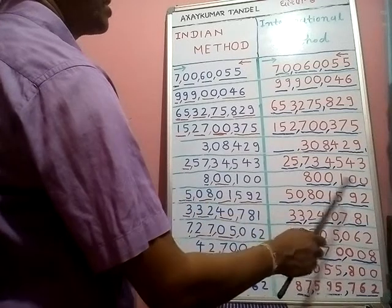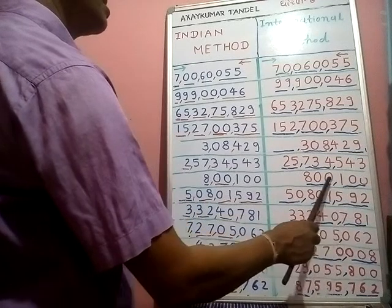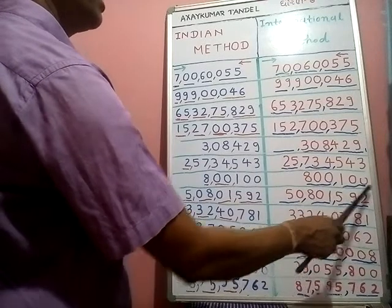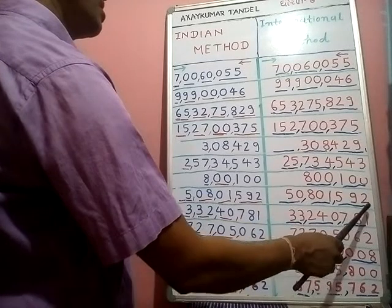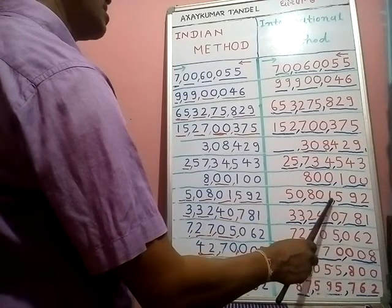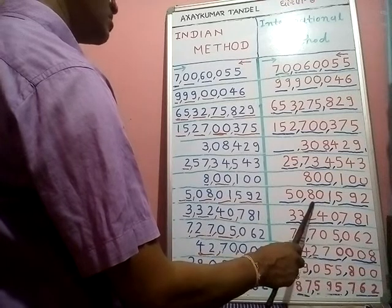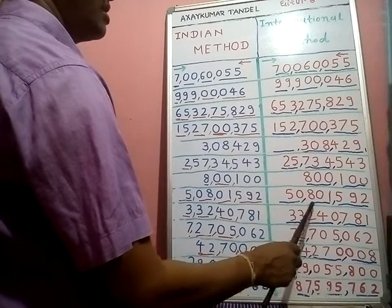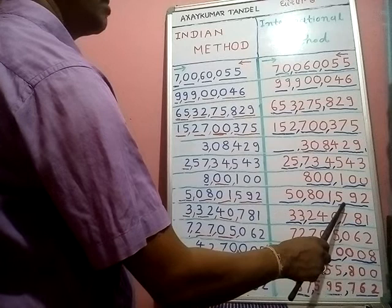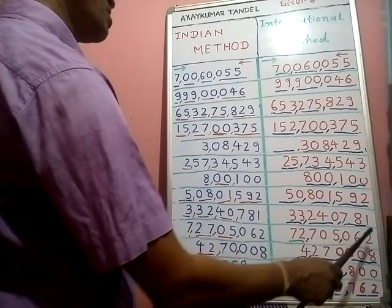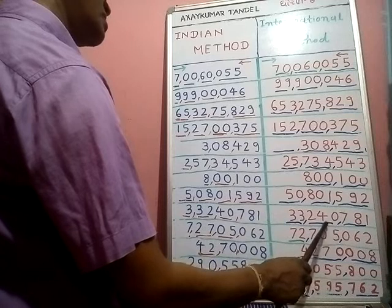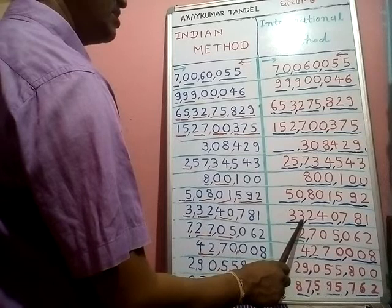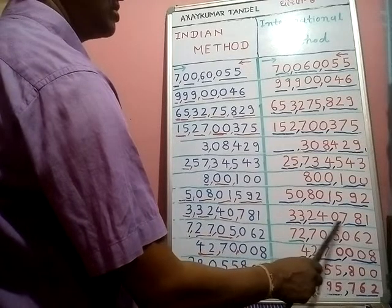Next one — ones, tens, hundreds, thousands, ten thousands, hundred thousands. We read: eight hundred one thousand one hundred. Next one — ones, tens, hundreds, thousands, ten thousands, hundred thousands, millions, ten millions. We read: fifty million eight hundred one thousand five hundred ninety-two. Next: thirty-three million two hundred forty thousand seven hundred eighty-one.